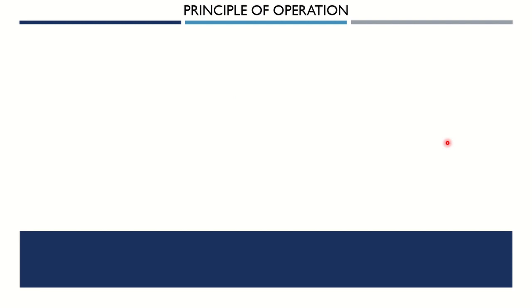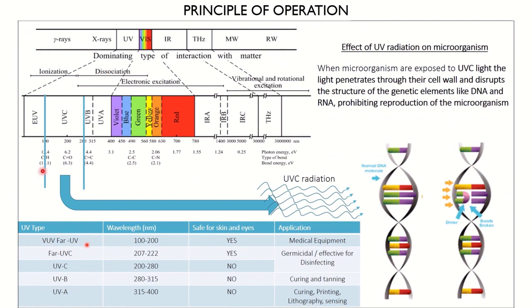Before going into today's system, let's look into the principle of operation of an ultraviolet sanitization or disinfectant system. This is the spectrum of electromagnetic radiation known to mankind, and out of this spectrum we are going to use ultraviolet radiation. Ultraviolet radiation has three parts: UVA, UVB, and UVC. UVC is germicidal in nature — it is the radiation which can kill microorganisms. UVC is further divided into three more parts: UVC, far-UVC, and vacuum UVC.